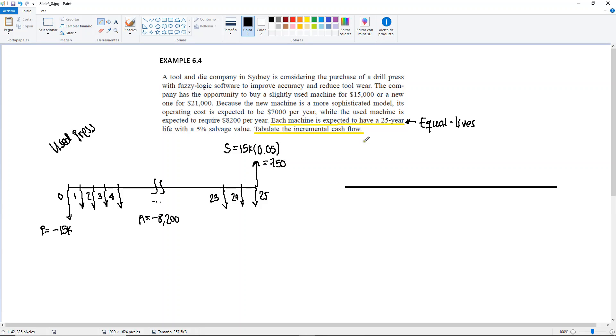Now let's draw a similar diagram for the new press. Same thing, we have year 0, 1, 2, 3, 4. We continue, because there's no cash flows in the middle. So I'm just going to have three more years over here. For this one, the initial investment is $21,000.